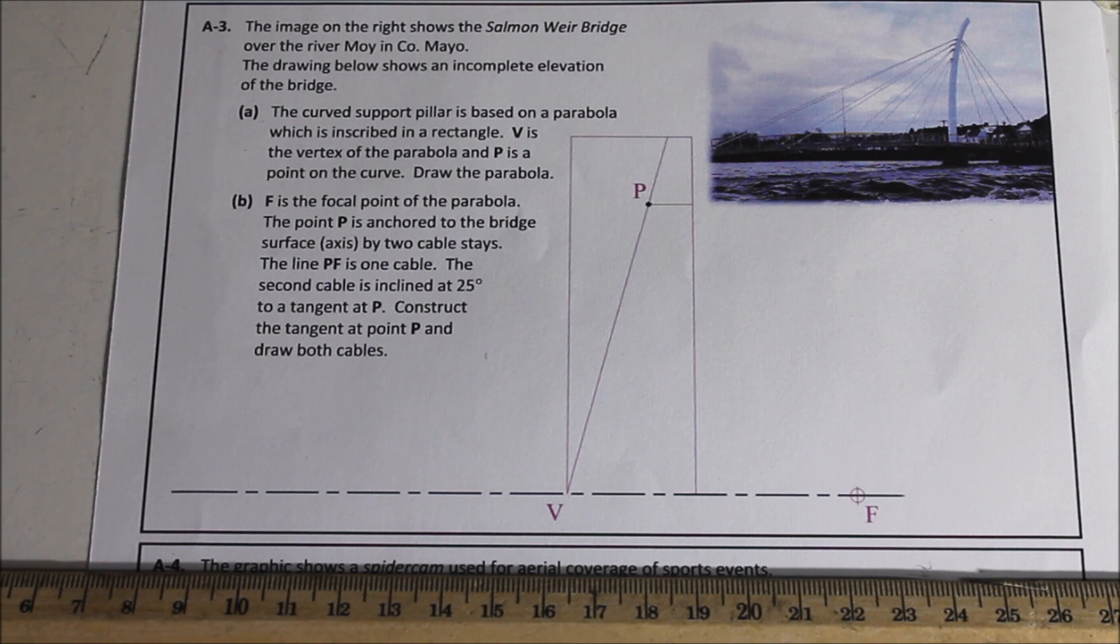Part A: the curved support pillar is based on a parabola which is inscribed in a rectangle. V is the vertex of the parabola and P is the point of the curve, draw the parabola.